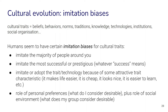One of the ways that humans drive cultural evolution through less conscious or completely unintentional ways is through imitation biases. Humans seem to have these imitation biases even from a very young age, and we do it in reliable ways. We might imitate the majority of people around us; we might imitate the most successful or prestigious depending on the context; we might adopt a trait or technology because of some attractive characteristic like it makes life easier, it's cheap, it looks nice, or it's easier to learn. And we may also have personal preference — what do I consider desirable — plus the role of the social environment: what does my group consider desirable?